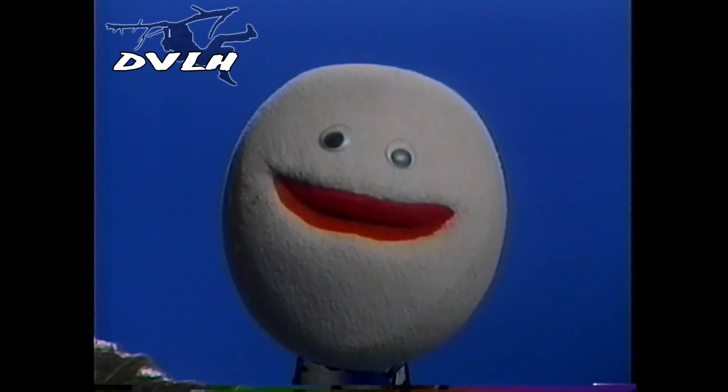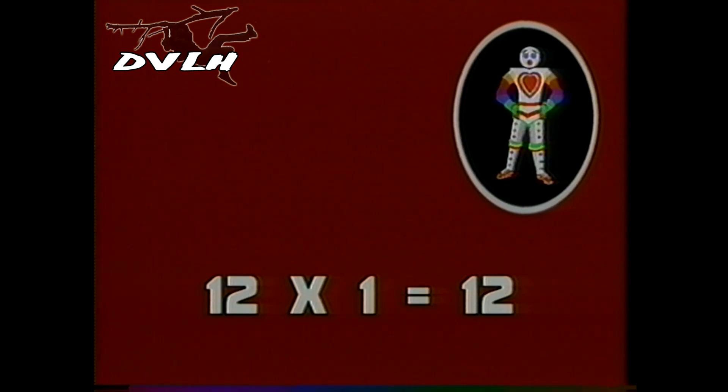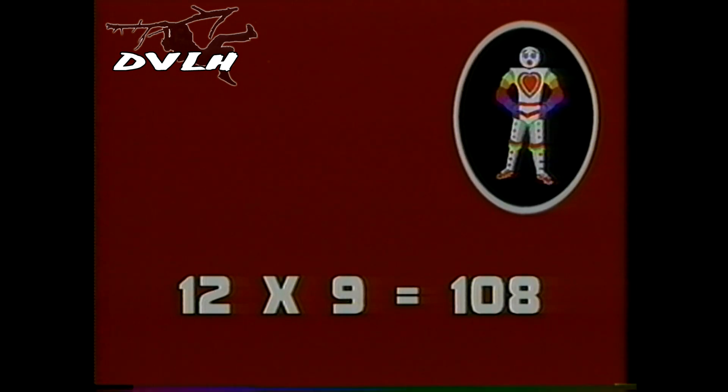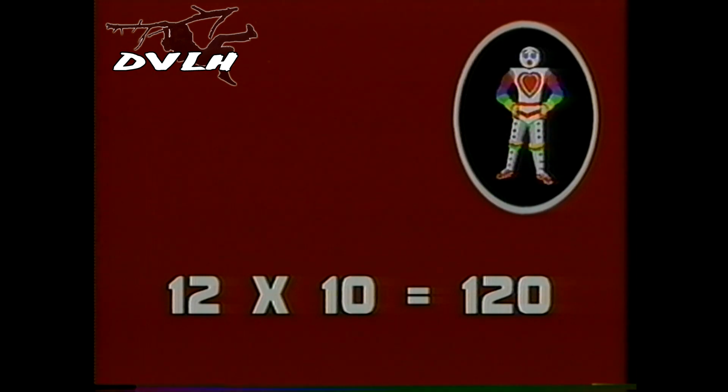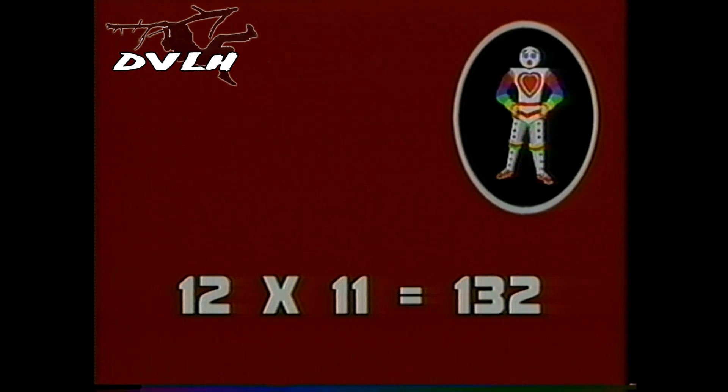Hey kids, guess what? Here comes the very last ones. The tables of twelves. Twelve times one is twelve. Twelve times two is twenty-four. Twelve times three is thirty-six. And twelve times four is forty-eight. Twelve times five is sixty. And twelve times six is seventy-two. Twelve times seven is eighty-four. And twelve times eight is ninety-six. Twelve times nine is a hundred and eight. And twelve times ten is a hundred and twenty. Twelve times eleven is a hundred and thirty-two.